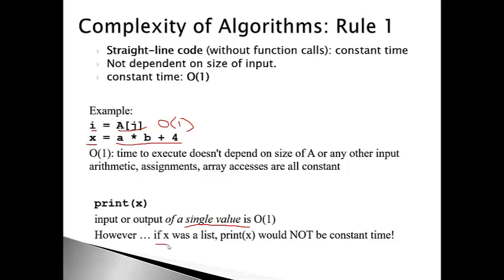Input or output of a single variable is O(1). So if x is the value four, then print x is a constant time operation. However, if x is a list, then print x would not be constant time, because the time it takes to print x depends on the sample size — it takes much longer to print a list of size 10,000 than a list of size 10.